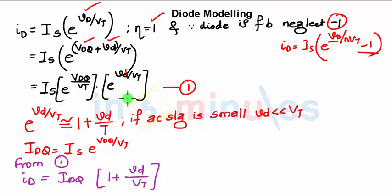Now I am considering this first term. We can write e^(Vd/Vt) is approximately equal to 1 + Vd/Vt if the AC signal is small, that is the voltage Vd is less than Vt. Vt at room temperature is 26 millivolts. So if the value of Vd is less than that, we can expand this using the linear series - you will get the value as 1 + Vd/Vt. So e^(Vd/Vt) can be replaced with 1 + Vd/Vt.